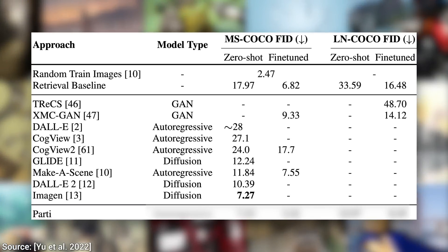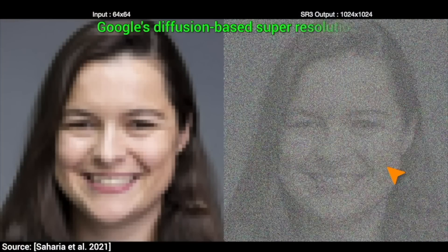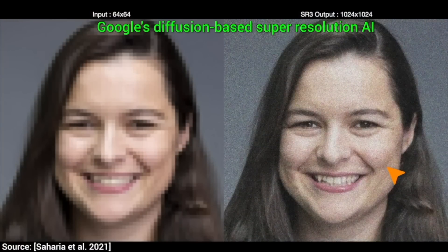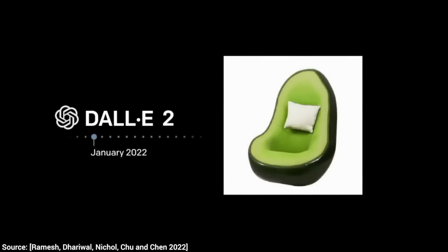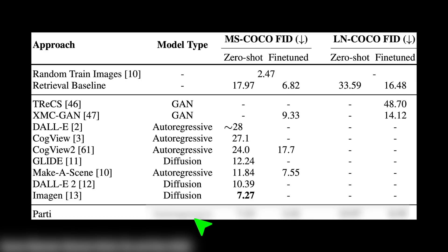Now, remember this image — I said that this is why Parti exists. Look, the two previous techniques used a diffusion-based model. This means that when we ask it something, it starts out from noise, and over time it learns to organize these pixels to form a beautiful image that matches our description better. This Parti technique is not a diffusion-based model; it is an autoregressive model.